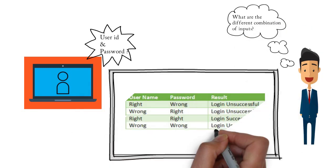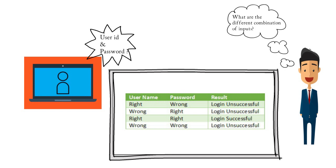Looking at the table, there are four combinations of user ID and password input. One: user ID correct, password wrong — login is unsuccessful. Two: user ID wrong, password right — login is unsuccessful. Three: user ID and password both correct — login is successful. Four: user ID wrong and password wrong — login is unsuccessful. A tester should test all these possible combinations and can design the test cases with the help of the decision table.